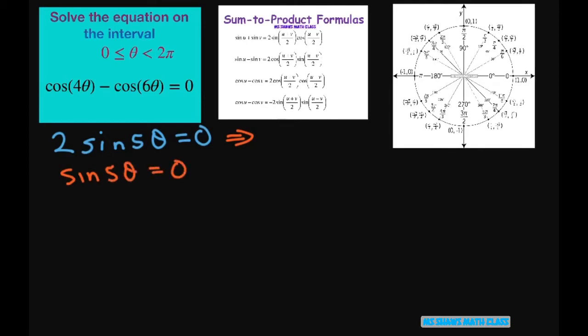So what we're going to do is let this part be α. So for sine of α equals 0, we still get our 0 and π. So we want to set this 5θ to our α. So we have 5θ equals 0 plus 2kπ because we have to get all the solutions. And we have 5θ equals π plus 2kπ.